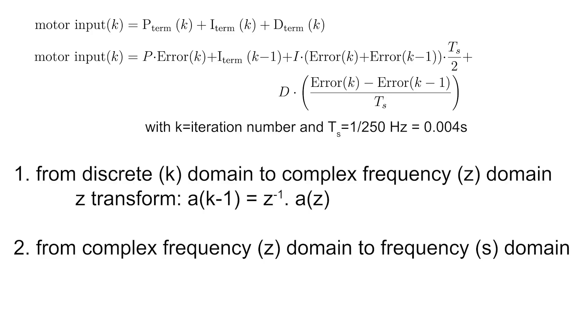For the first transformation, you can use a scaling property of the z transform as displayed on the screen. To perform the second transformation, you can make use of the bilinear or Tustin equation.